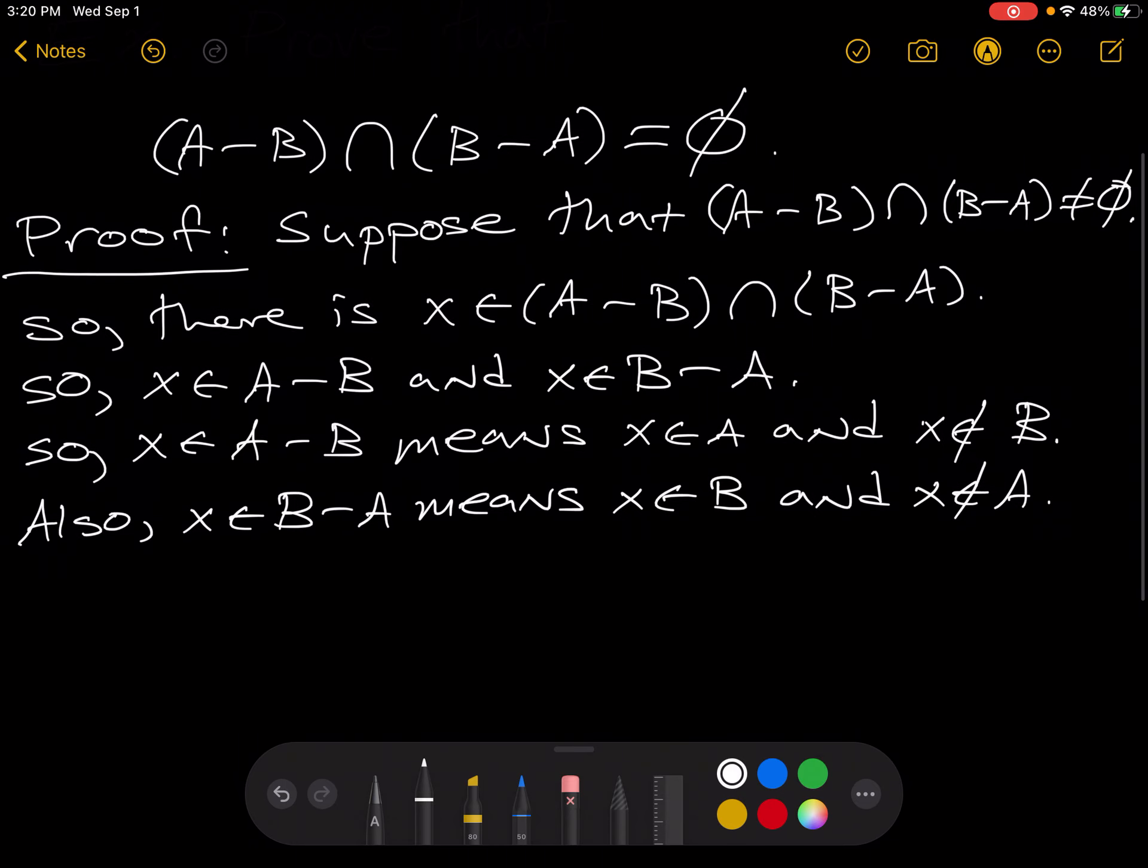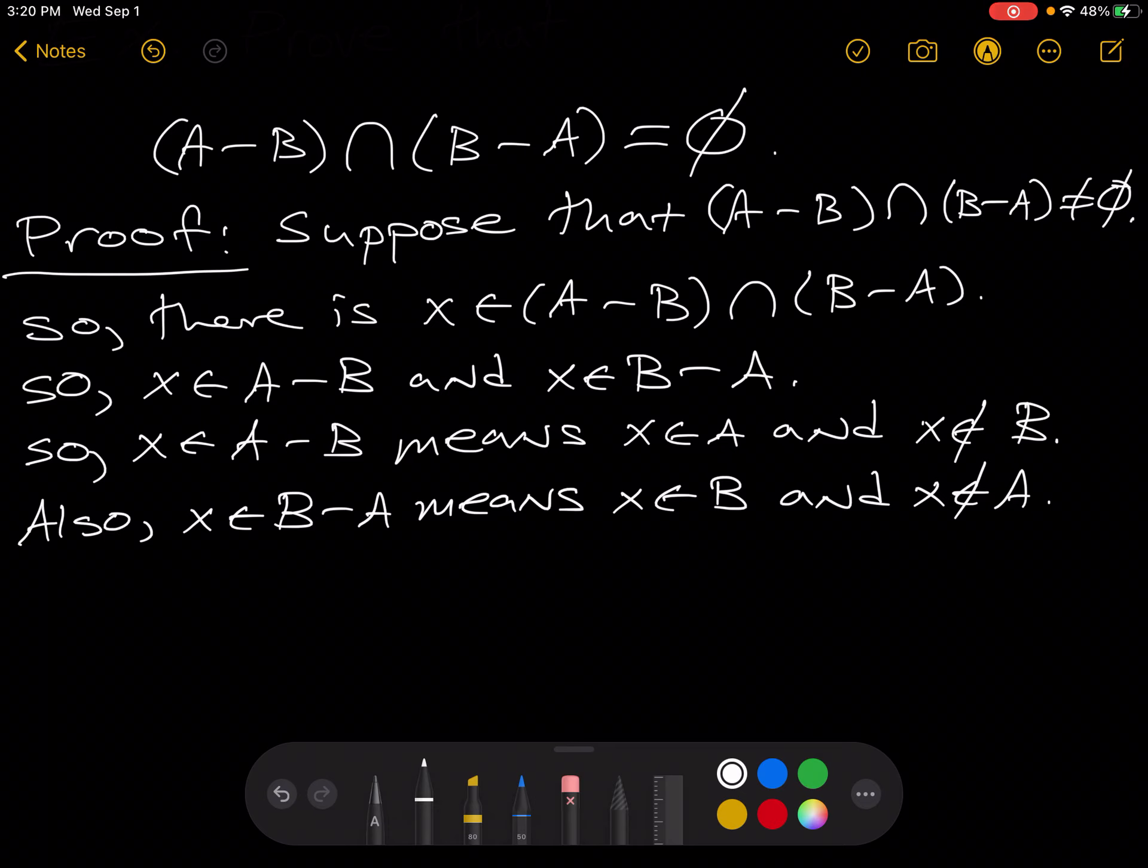And here's where we find our contradiction. Remember when we write something in a proof, we have implied behind the scenes saying this is true. So we're saying that it's true that x is in A and x is not in A. That just simply can't be. It can't be that x is both in A and not in A. This is a contradiction.